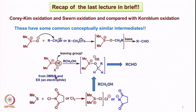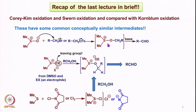We took DMSO-based oxidations of different kinds and saw the similarity in which DMSO was activated by an electrophile to form a sulfonium ion species with a leaving group. This leaving group is formed because the oxygen of DMSO reacts with the electrophile. We choose an appropriate electrophile such that OE becomes a nice leaving group, then the alcohol reacts to form an intermediate similar to the Kornblum type, leading to the aldehyde.